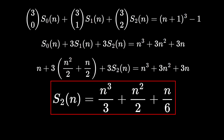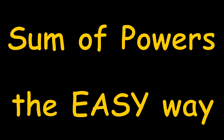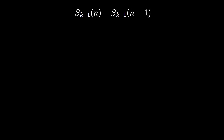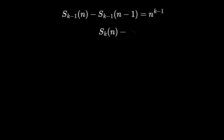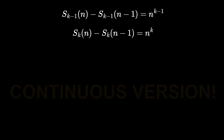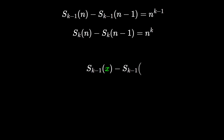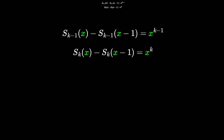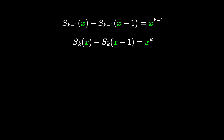The number of terms will increase as we take higher values for k, so it would be a dream to use a less recursive formula. Now, sum of powers the easy way. What happens if we take S_{k-1}(n) and subtract S_{k-1}(n-1)? We get the last power: n to the k minus 1. Do it again with k instead of k minus 1, and the difference is n to the k. We look at the continuous version since the S functions are polynomials holding even for real values x.